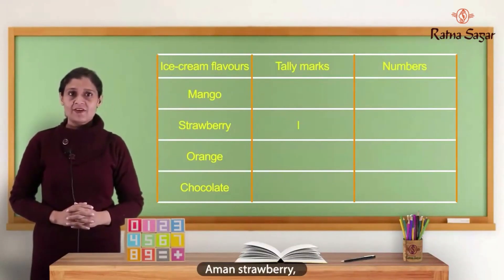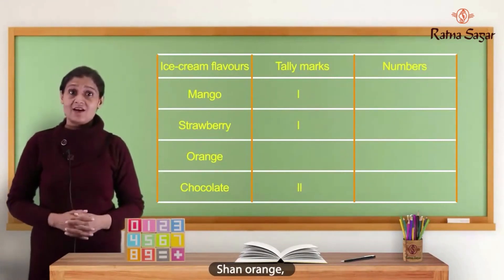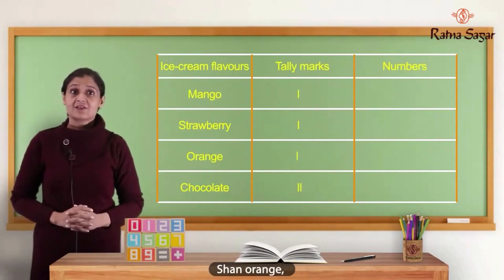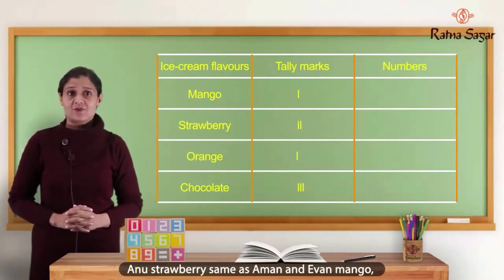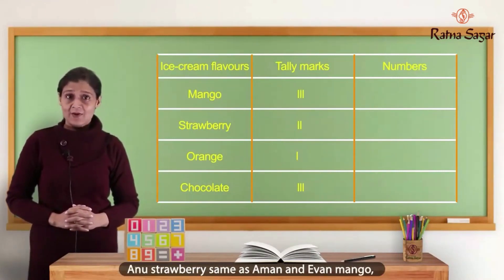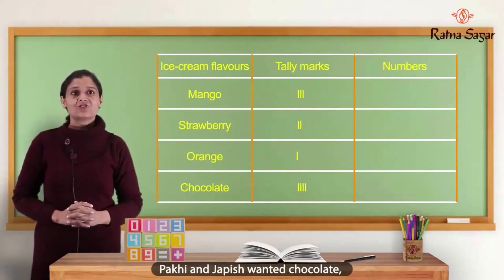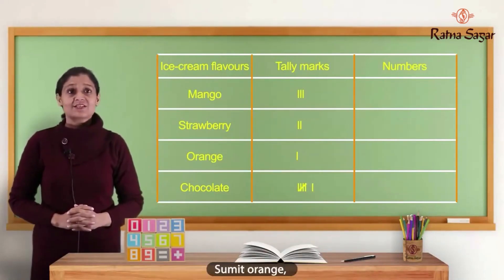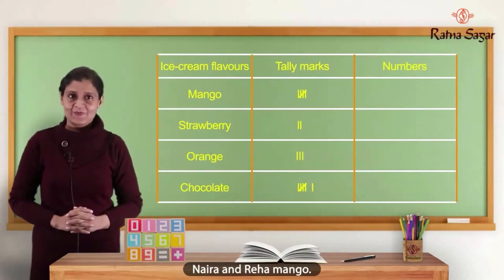Aman strawberry. Pihu mango. Ahana chocolate. Diyah chocolate. Shan orange. Raghav also chocolate flavor. Anu strawberry, same as Aman, and Ivan mango. Saloni chocolate. Pakheed and Japesh wanted chocolate. Sumit orange. Neha also orange. Nayra and Reha mango.